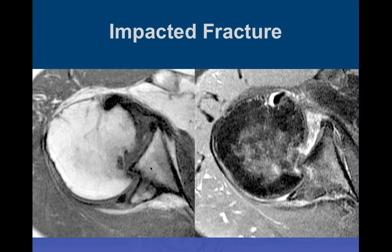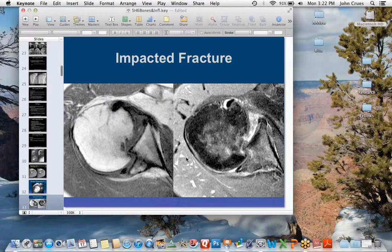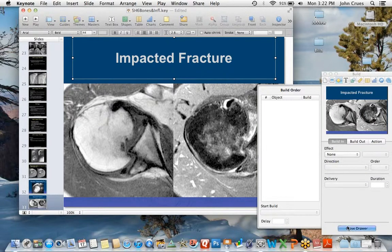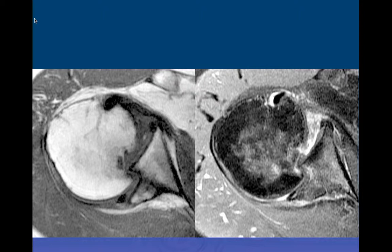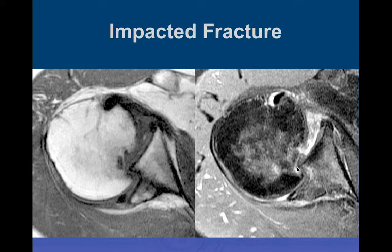On two axial views of the shoulder, there appears to be a posterior dislocation with a locked impaction fracture — the anterior humeral head impacting on the posterior corner of the glenoid, which is a reverse Hill-Sachs injury. This is an impaction fracture of the posterior glenoid with a concurrent reverse Hill-Sachs impaction, rather than a complete dislocation — essentially fracturing both bones simultaneously.